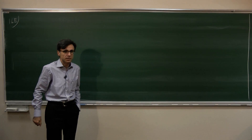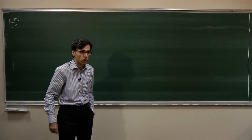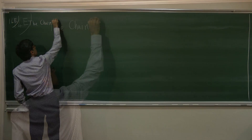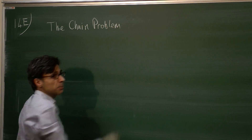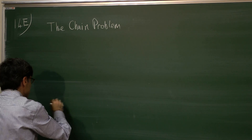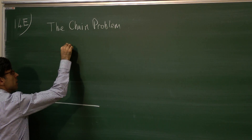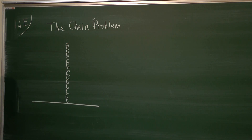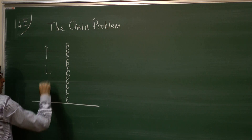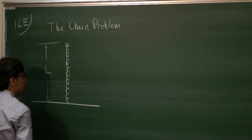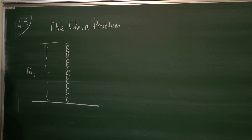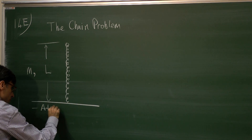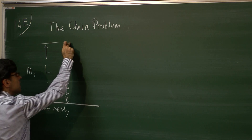Our next problem is quite a standard problem. Let's name it as the chain problem. In this problem, we have a chain of length L and mass M, which is positioned vertically. The length is L, mass is M. Initially, it is at rest, then released from the top.